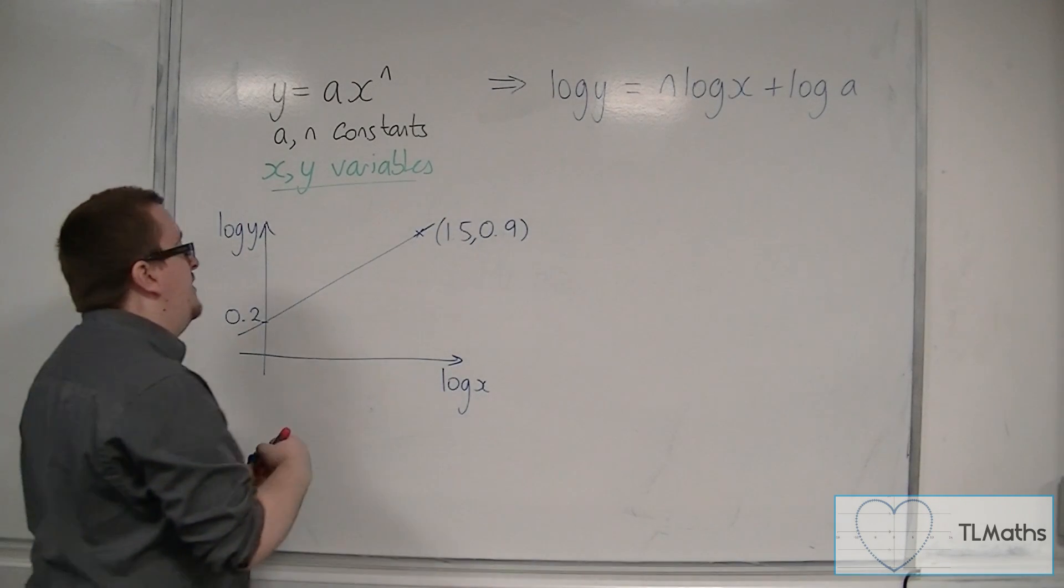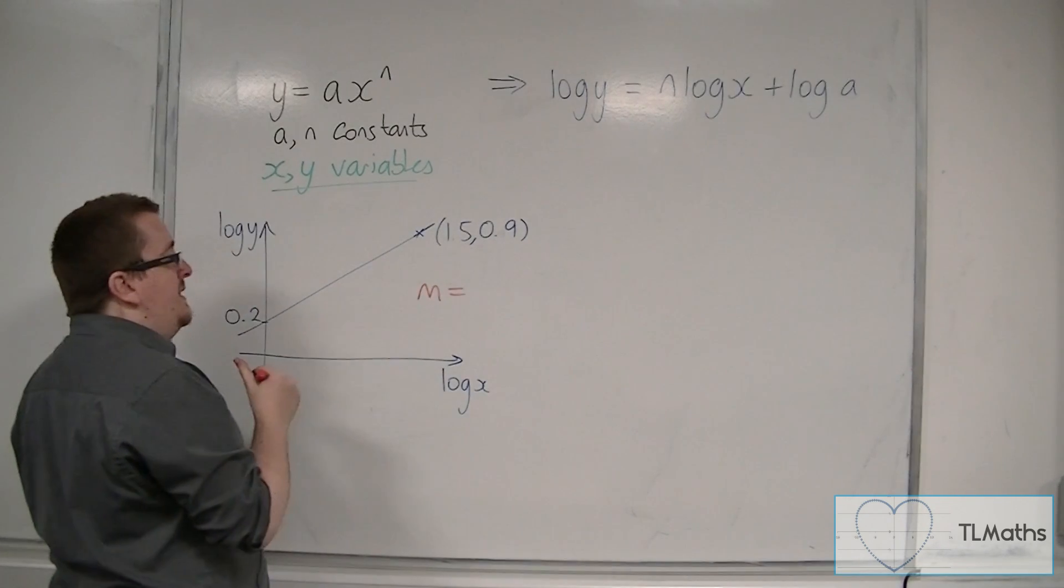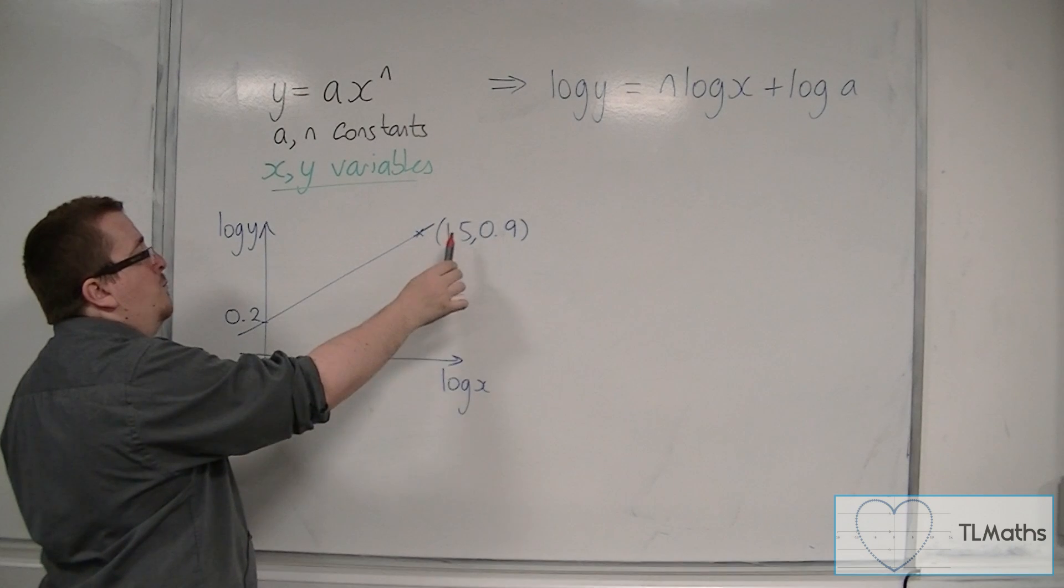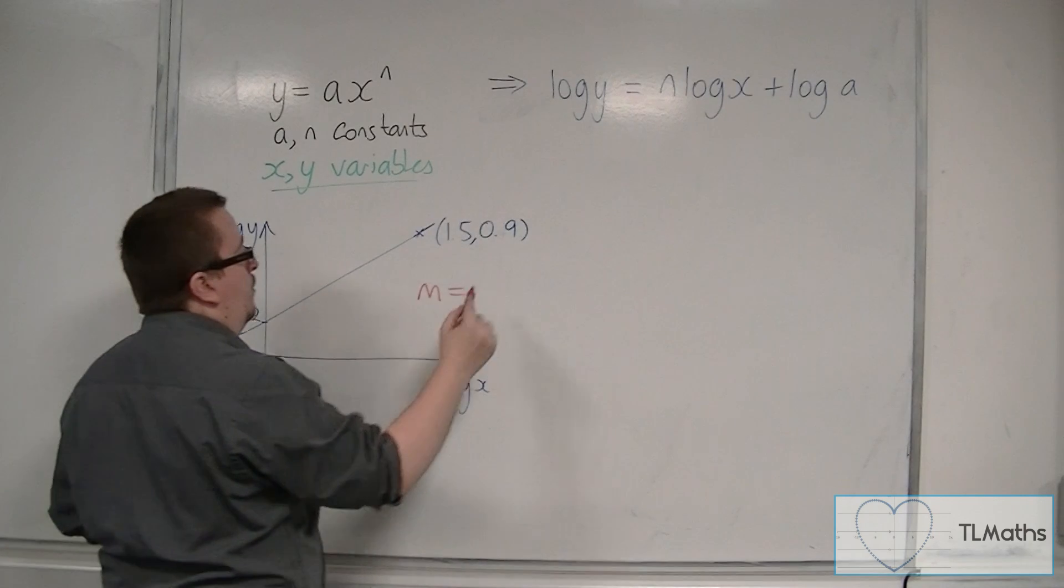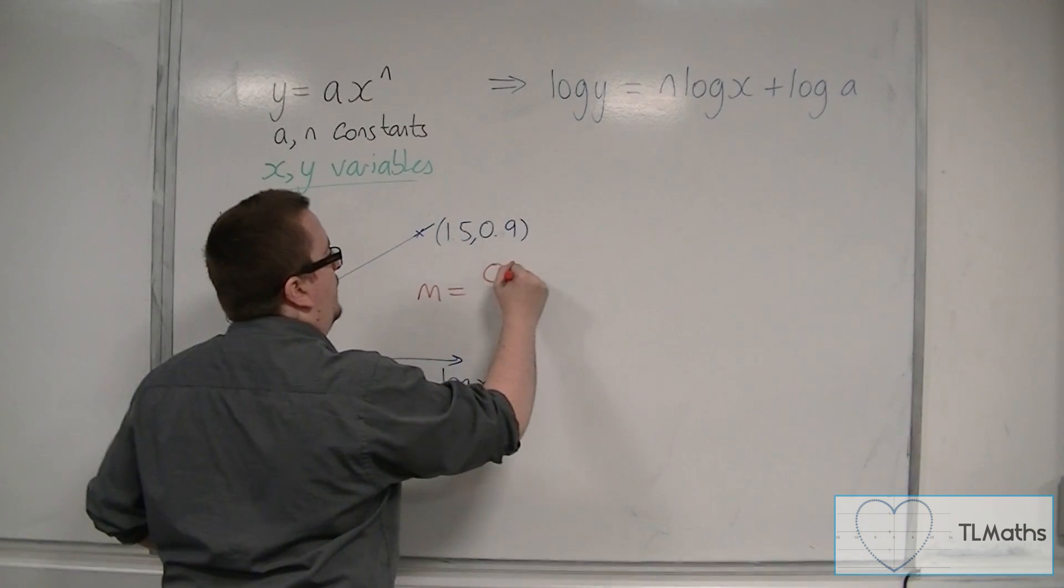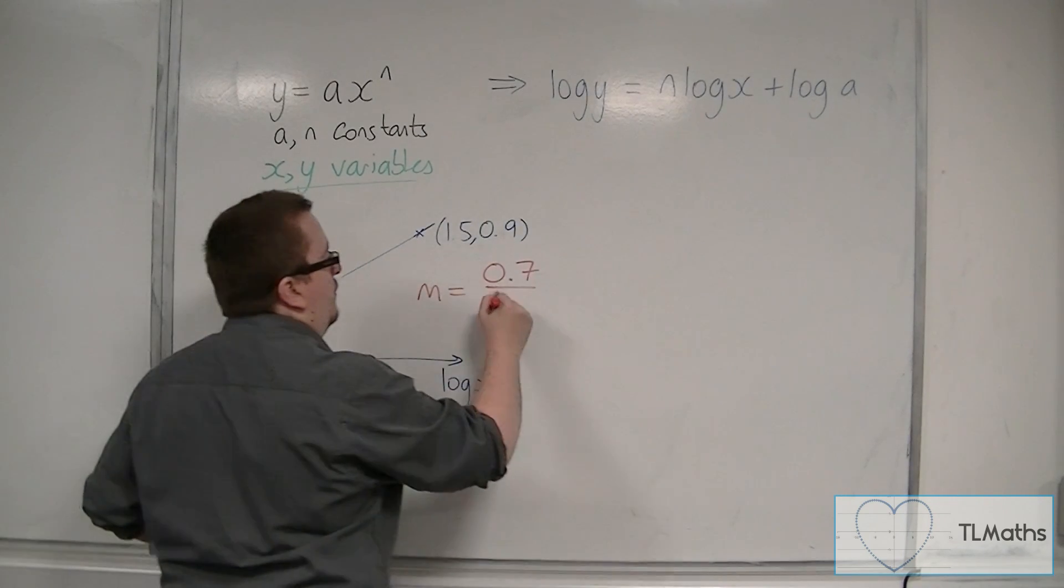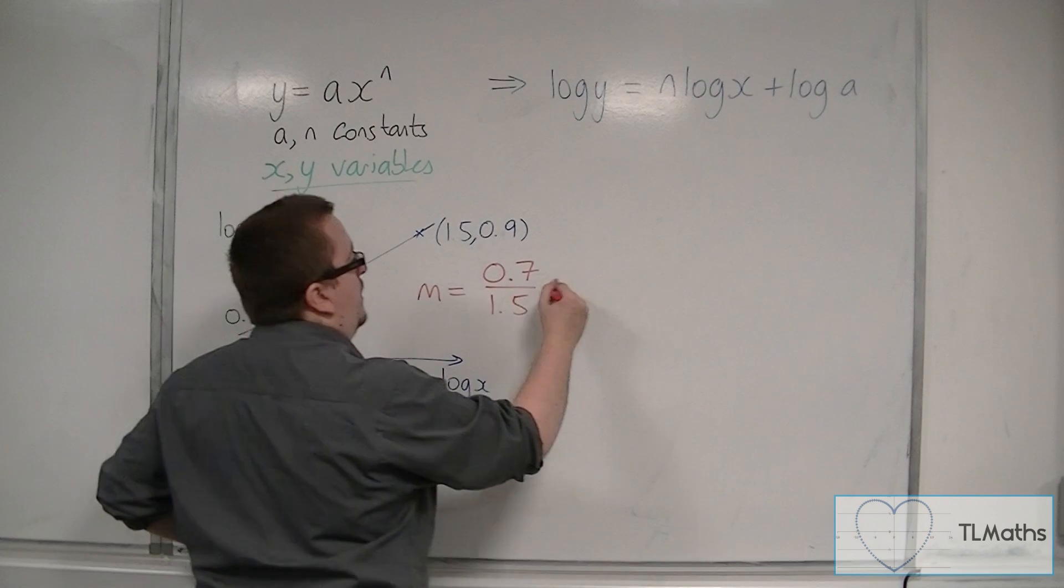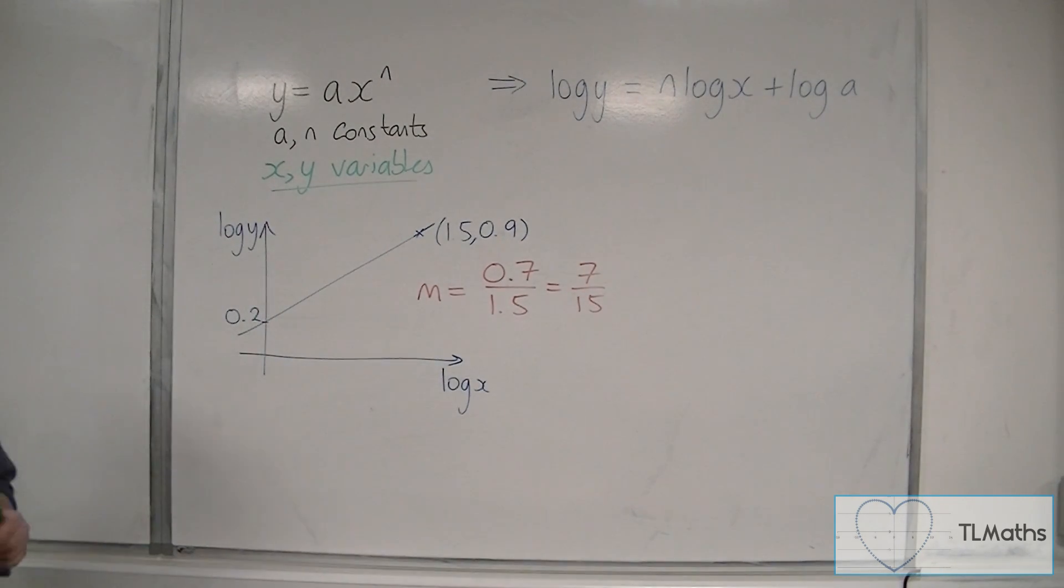So, first thing to do is to work out what the gradient is. The gradient m is the difference in y divided by the difference in x. So, 0.9 divided by 0.2, or sorry, 0.9 take away 0.2 is 0.7, and then 1.5 take away 0, just 1.5. So, in other words, this is 7 over 15. So, that's the gradient of this line.